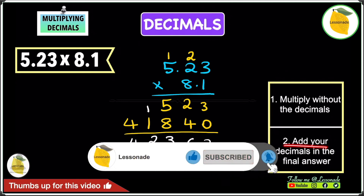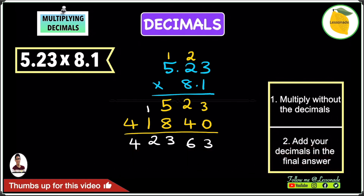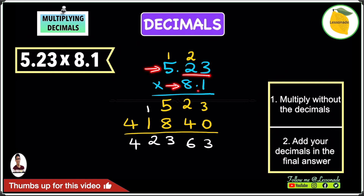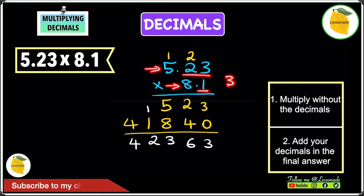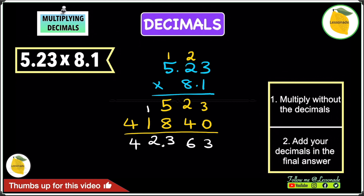The next step is to add the decimals to the final answer 42363. We look at the numbers we're multiplying and count the digits after the decimal point. In 5.23, we have 2 digits after the decimal. In 8.1, we have 1 digit. That gives us a total of 3, so our answer must have 3 digits after the decimal point. Counting from the right: 1, 2, 3 — the decimal point goes between the 2 and the 3, giving us an answer of 42.363.